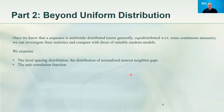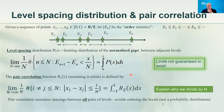Once we know that a sequence is uniformly distributed, we can look at finer statistics. People have only very recently started looking at these on the time scale of this theory. I'll discuss two such quantities: the level spacing distribution and the pair correlation function.